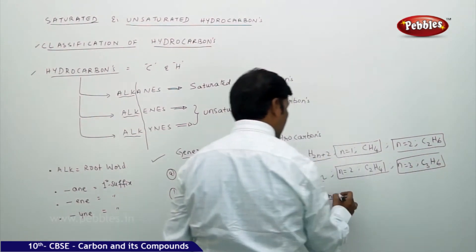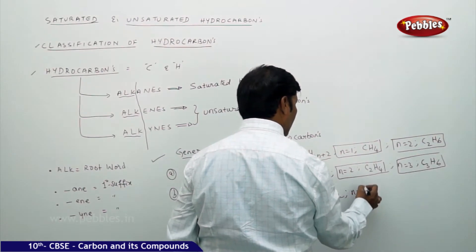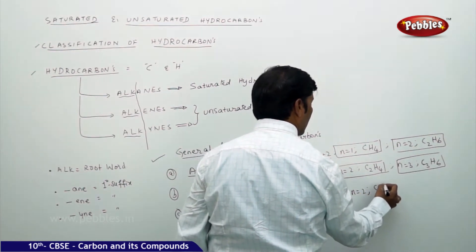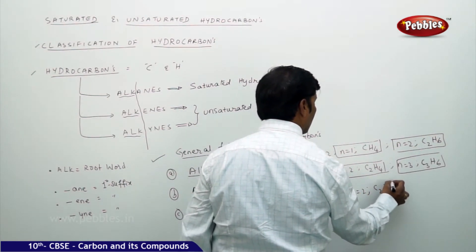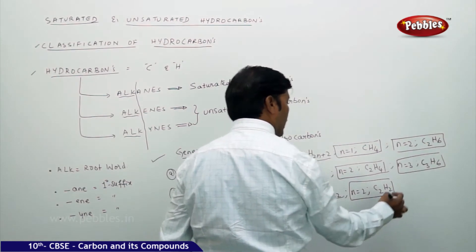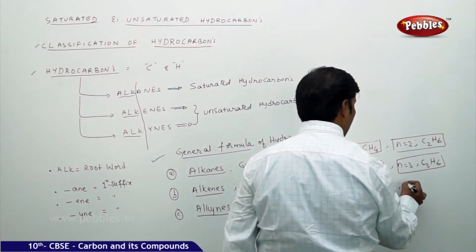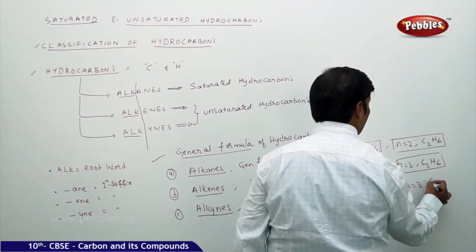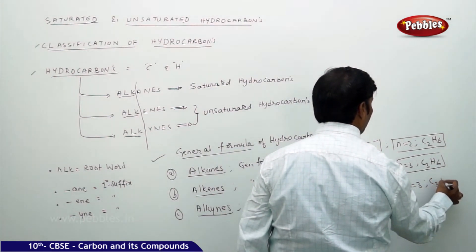For alkynes, substituting n = 2 gives C₂H₂, and n = 3 gives C₃H₄.